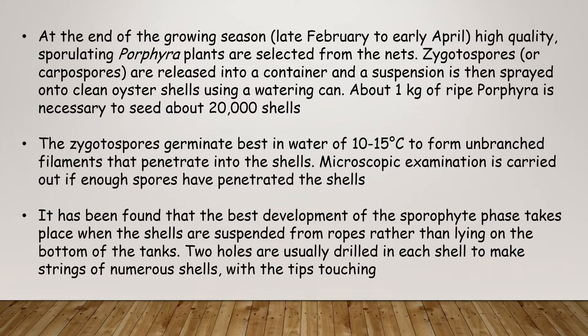Towards the working season, at the end of the growing season — late February to early April — high-quality sporulating Porphyra plants are selected from the net. Zygotospores or carpospores are released into a container and a suspension is then sprayed onto clean oyster shells using a watering can. About 1 kg of ripe Porphyra is necessary to seed about 20,000 shells. The zygotospores germinate best in water of 10 to 15 degrees centigrade to form unbranched filaments that penetrate into the shells.